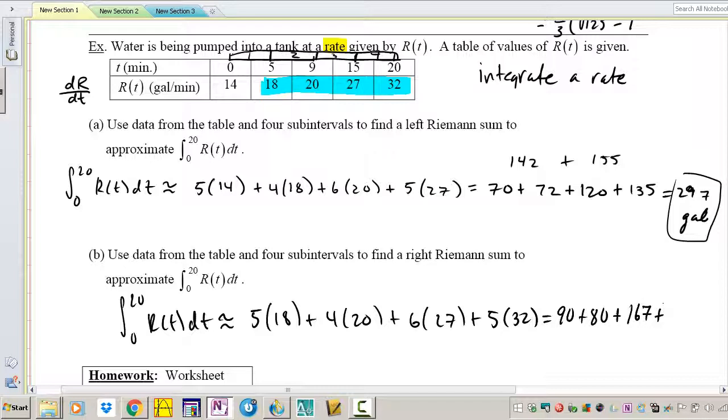Okay, 90 and 80 is 170, 167, and yeah that is going to be 327. So your final answer is going to be, that does not look right.